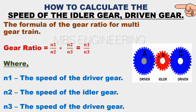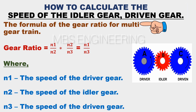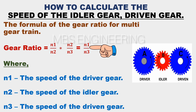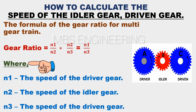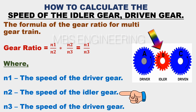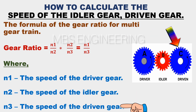How to calculate the speed of the idler gear and driven gear. The gear ratio equals N1 divided by N2, and that obtained value multiplied by N2 divided by N3. So the gear ratio equals N1 divided by N3, where N1 is the speed of the driver gear, N2 is the speed of the idler gear, and N3 is the speed of the driven gear.